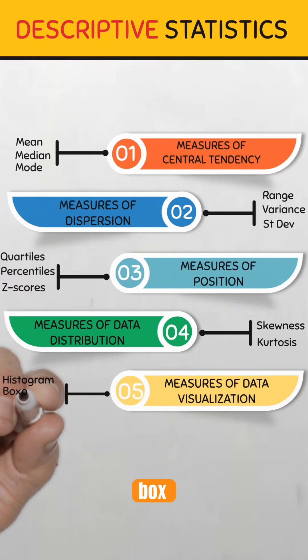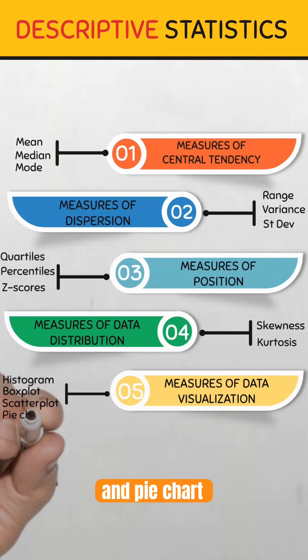Histograms show frequency distribution. Box plots show the summary of spread and outliers. Scatter plots show relationships between variables, and pie charts show proportions within a data set.